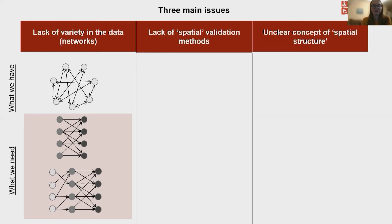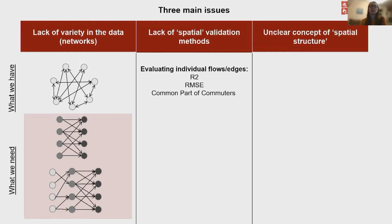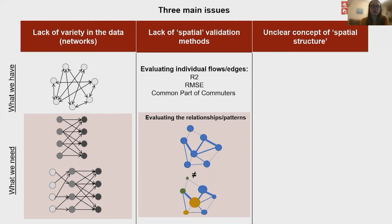Secondly, we lack methods that validate the spatial patterns of modular networks. The current validation methods evaluate only how accurately each individual flow is predicted. They are not able to evaluate how well the models replicate the patterns of the flow.